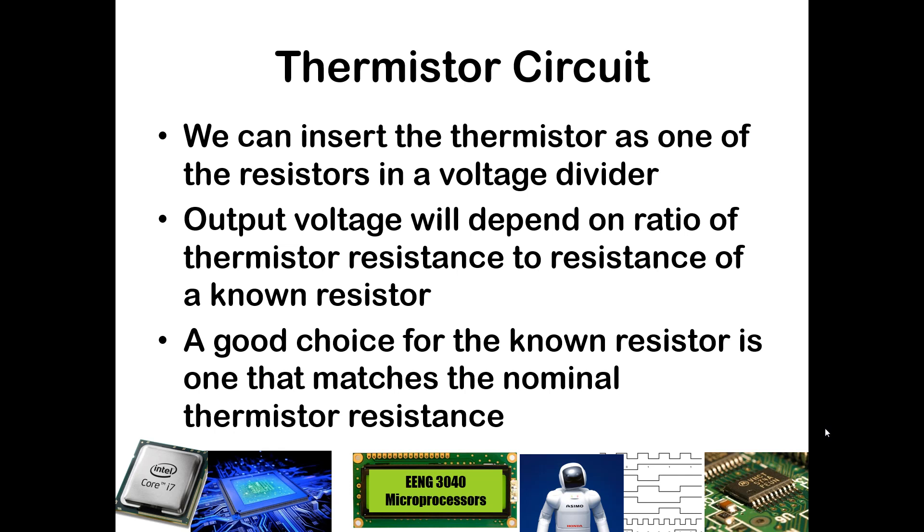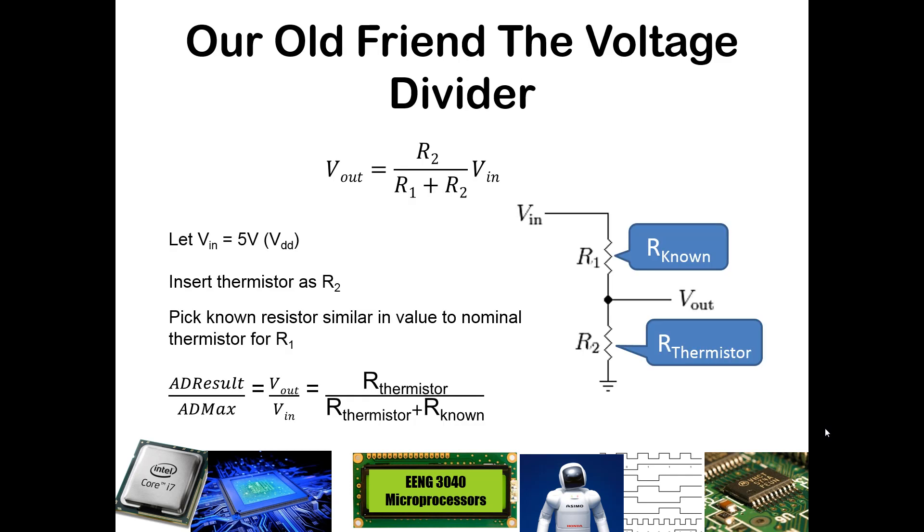A good choice in constructing such a circuit is to try to match the resistance of the known resistor with the nominal thermistor resistance. In order to do this, we will use our old friend, the voltage divider. If you took circuit analysis with me, I point out voltage dividers in almost every circuit. By the end of the course, I start referring to them as our old friend, the voltage divider.